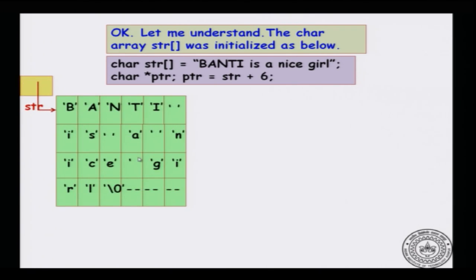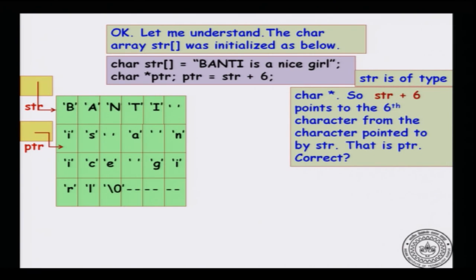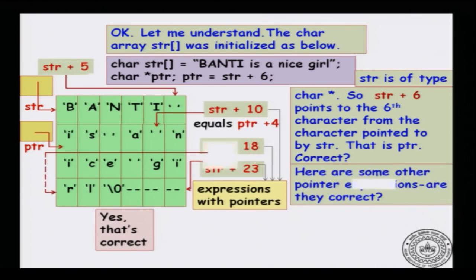Here is the code again — the one-dimensional array shown part by part. When I see str, it is a character array, and ptr = str+6 goes 6 locations away from the first location, so ptr points to the sixth location in the array. You can ask further: does str+5 refer to this location? Does str+10 refer to that location? Yes, these are all correct expressions.